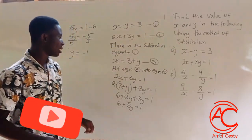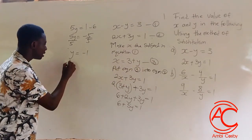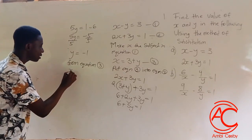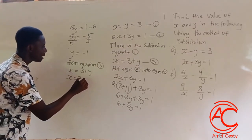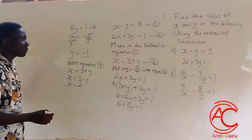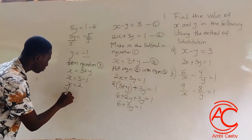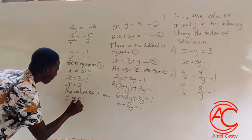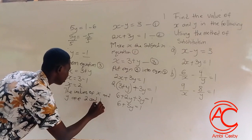So we have y equal to negative 1, and we are left to find x. We go back to equation 3: x is equal to 3 plus y. Substituting y equals negative 1, we get x is equal to 3 minus 1, so x is 2. The values of x and y are 2 and negative 1 respectively.